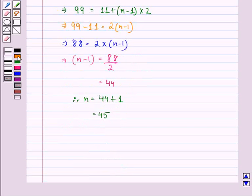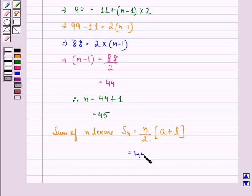We also know that sum of n terms, denoted by S_n, is equal to n by 2 into the first term that is A plus the last term that is L. That is equal to 45 divided by 2 into 11 plus 99.